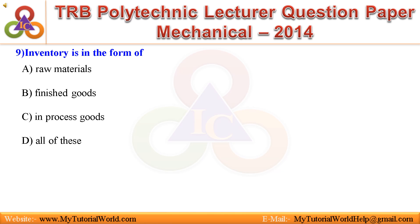Question 9: Inventory is in the form of. A. Raw materials. B. Finished goods. C. In-process goods. D. All of these. Answer is: All of these.